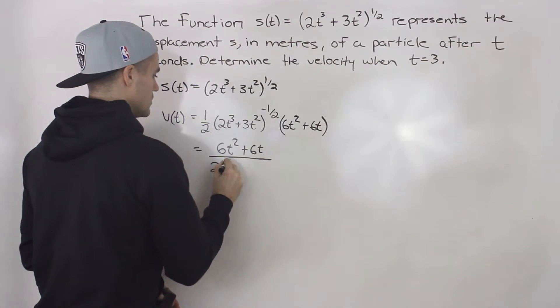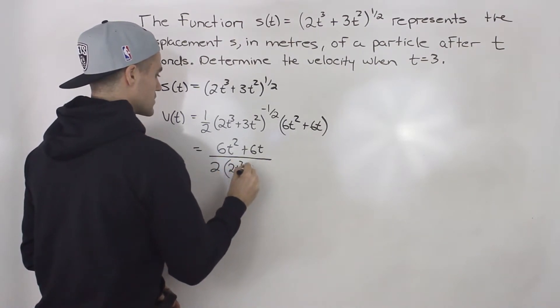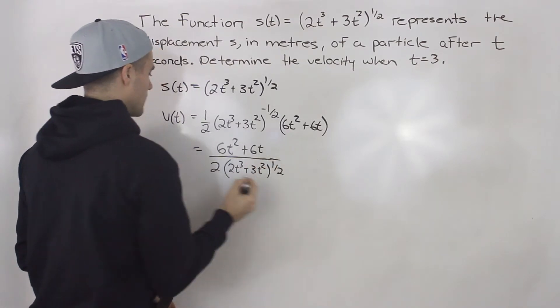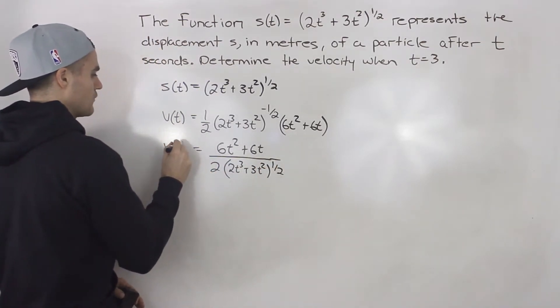So we can have this in the numerator, and then we'd have 2, and then this would be 2t³ plus 3t² to the power of a positive one half. So this is our function v(t).